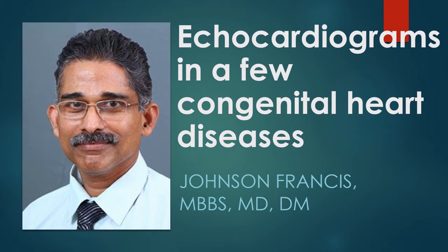In this series, we have echocardiograms of a few congenital heart diseases. The first one shows left ventricle to right atrium shunt associated with a perimembranous ventricular septal defect. Various possibilities are discussed. The second one shows an ostium primum atrial septal defect with tricuspid regurgitation. The third one shows a few views of tetralogy of Fallot. The intact patch at the site of intracardiac repair of sub-aortic ventricular septal defect in TOF is seen in the last few frames.